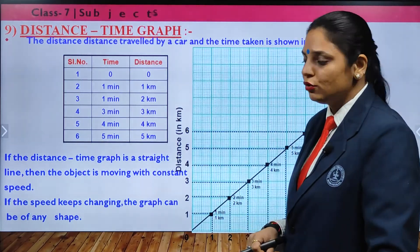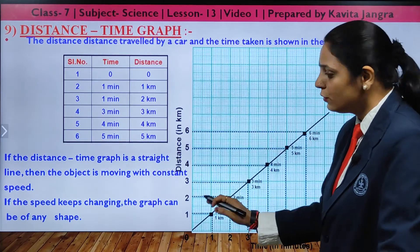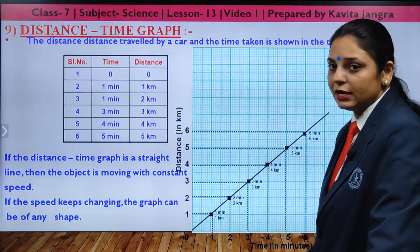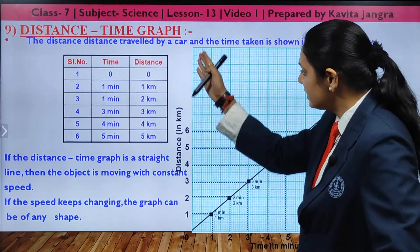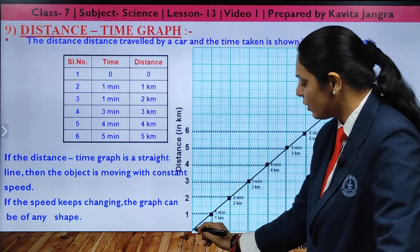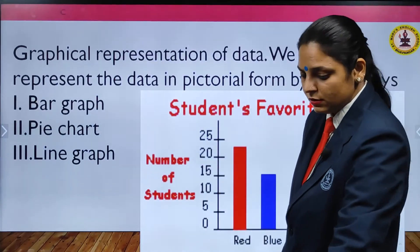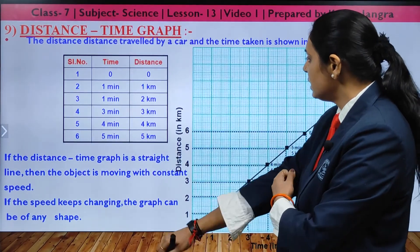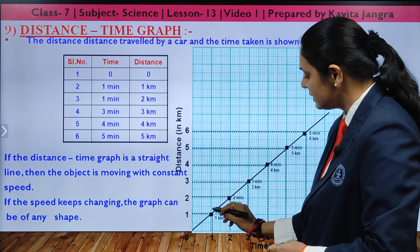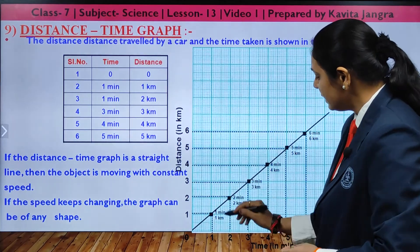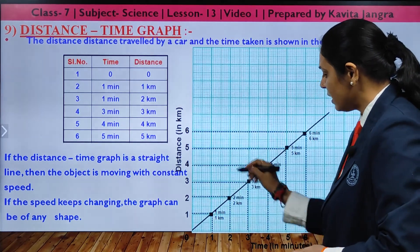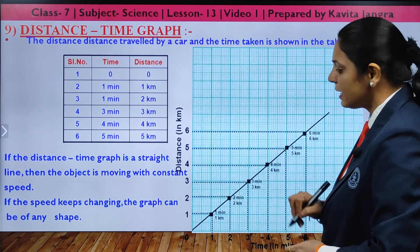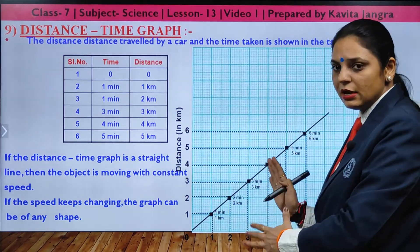The DT (distance-time) graph for uniform motion is drawn with time on the x-axis and distance on the y-axis, plotting equal intervals and drawing a straight line through the points. From this graph you can conclude: it represents constant speed, movement at regular intervals, and uniform motion.